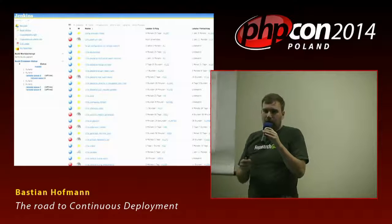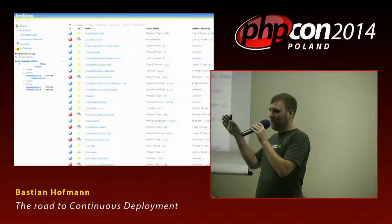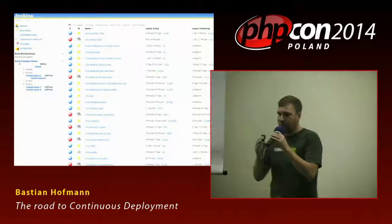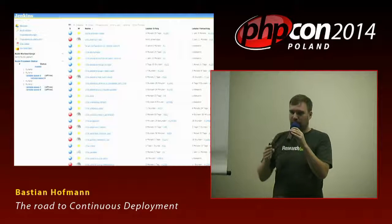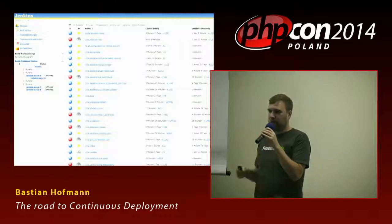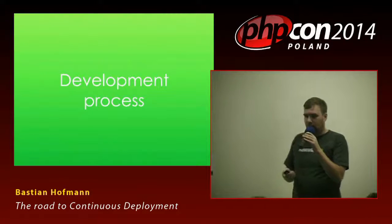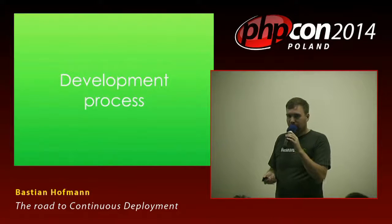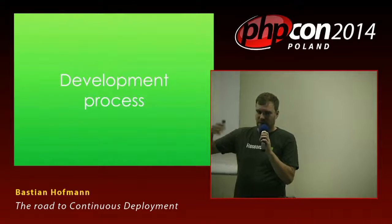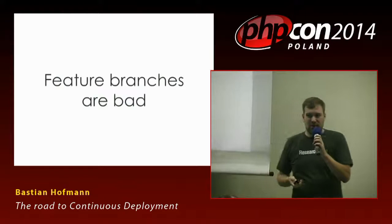Quality assurance: if we have all this set up, it makes total sense to do even if we won't do continuous deployment and we're fine with deployments every two or four weeks. Caring about quality is always a good thing, and automating all this is also always very beneficial. Next thing is your development process.